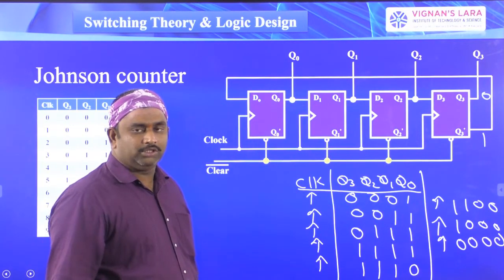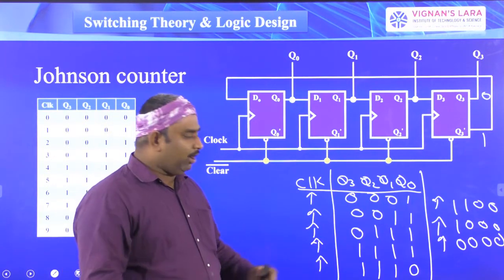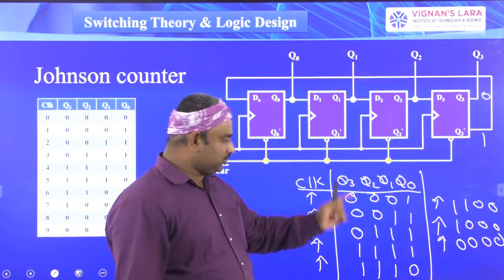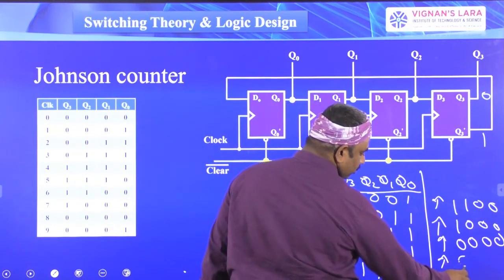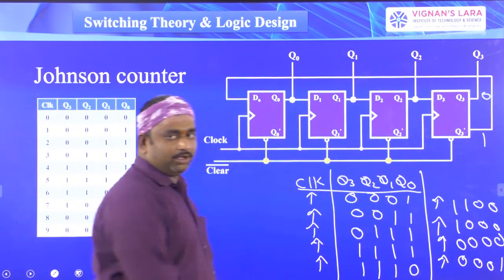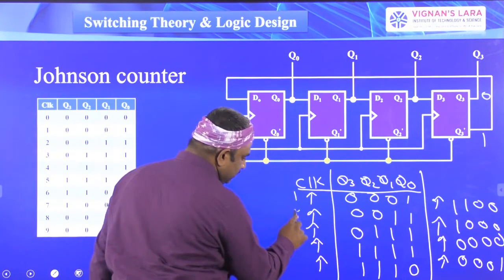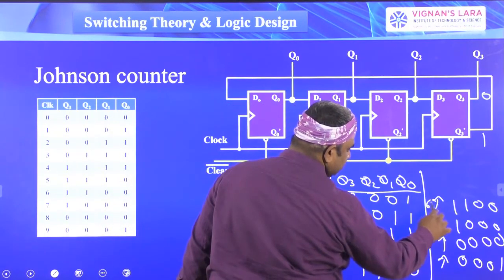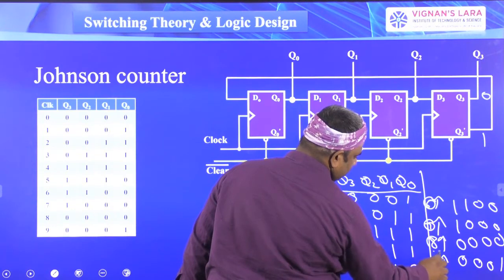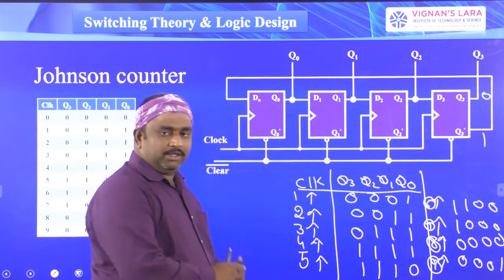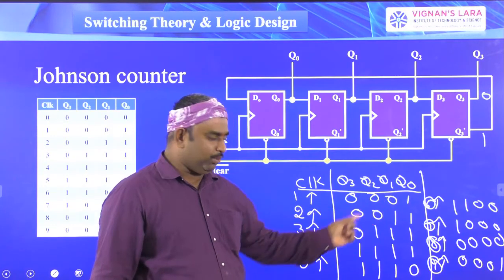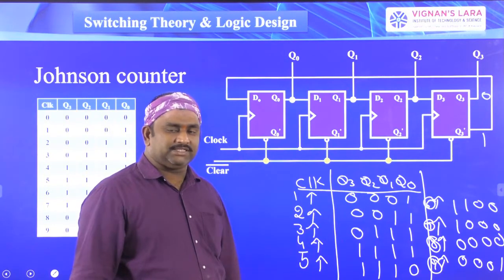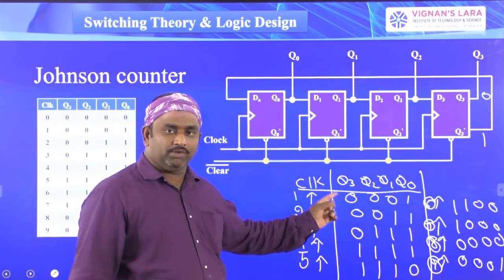All zeros are obtained after the eighth clock pulse. After giving the next clock pulse, the output becomes 0-0-0-1, which is the same as the first clock pulse output. So nearly eight clock pulses produce eight different values. We started from all zeros and ended with all zeros, after which the sequence 0-0-0-1 repeats.